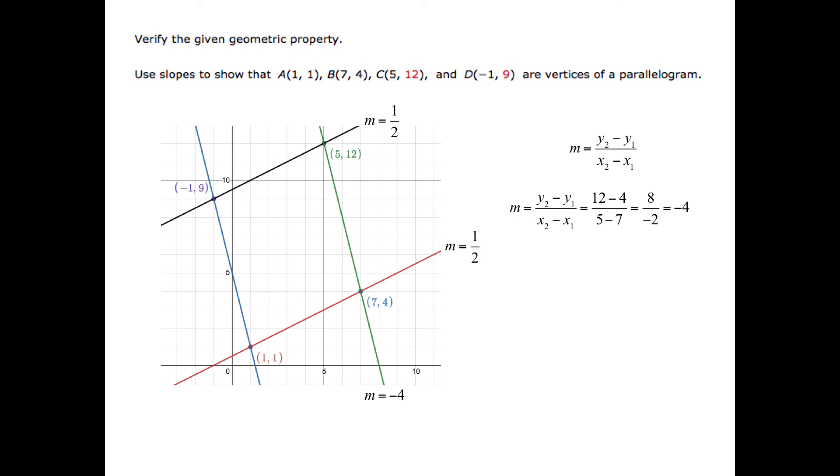So this line has a slope of negative 4. Now let's find the slope of the remaining line segment that passes through the points. Using the slope formula and substituting, we find 9 minus 1 divided by negative 1 minus 1, which would give us 8 divided by negative 2, which is again negative 4. So the slope of this line is negative 4.